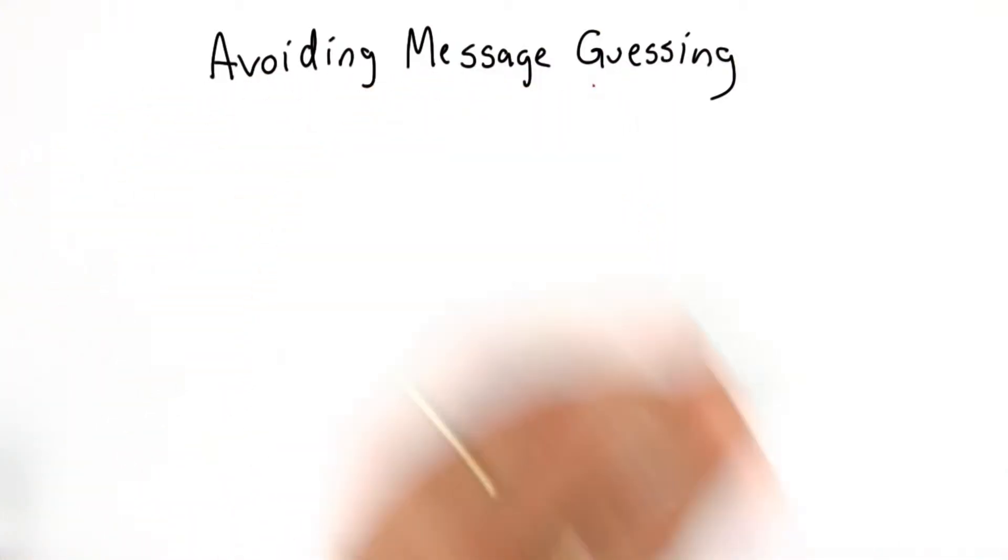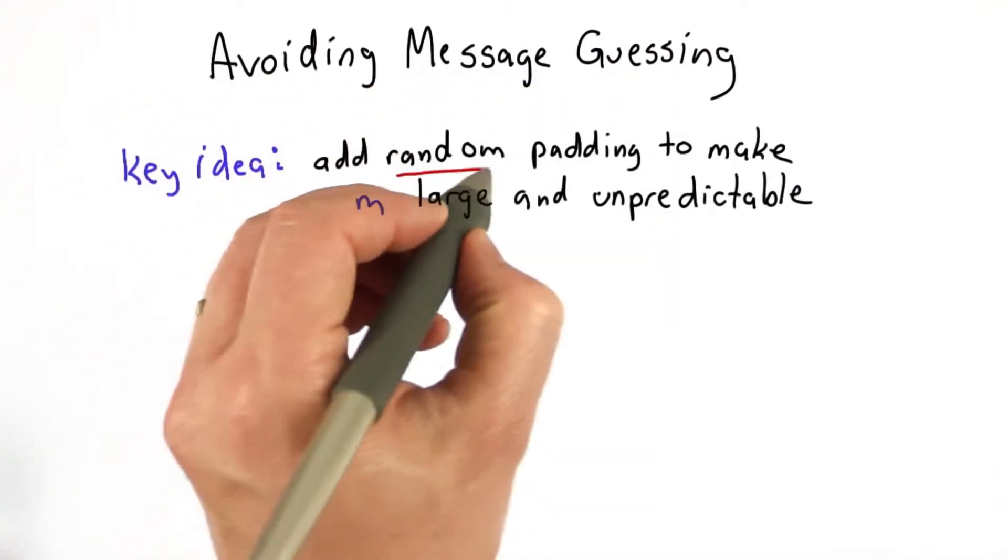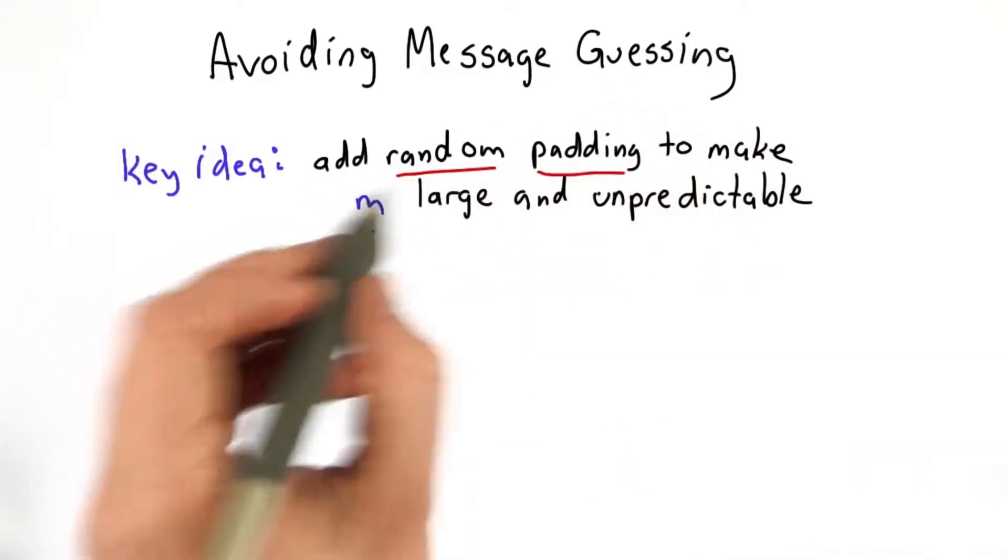Our goal is to avoid the message guessing attack. The key idea is to add some random padding to make the message large and unpredictable.